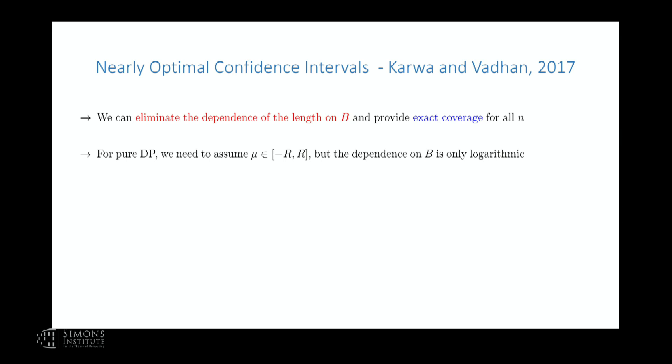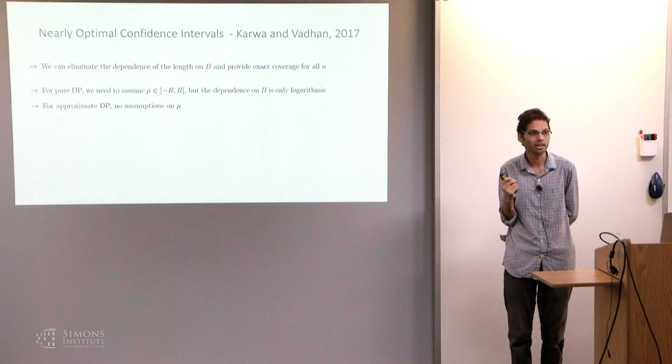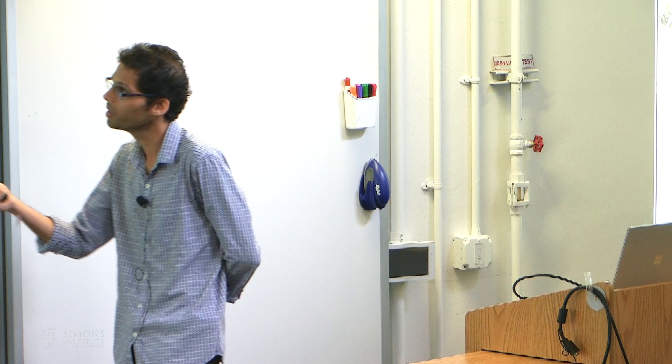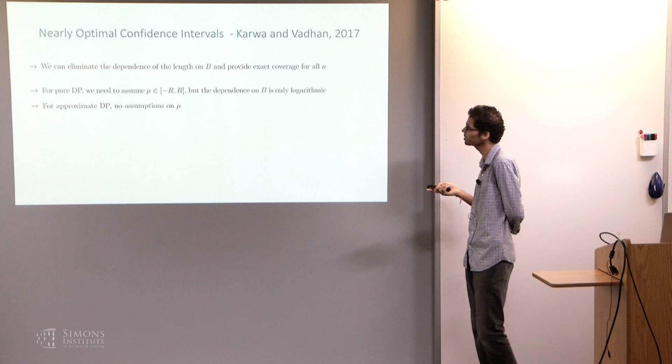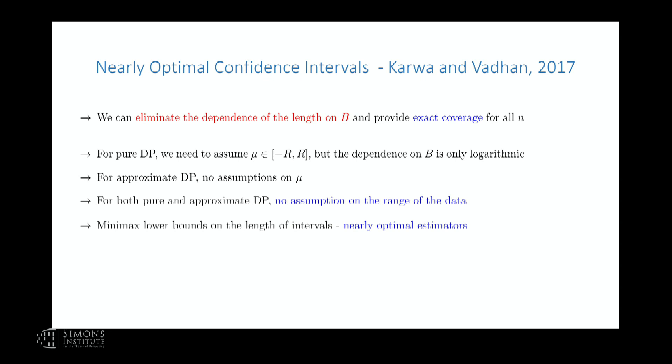For approximate differential privacy, there is no input needed from the end user for constructing these confidence intervals. We also show that these are minimax confidence intervals — we have lower bounds on the length of the intervals and our estimators match those lower bounds up to logarithmic factors. All of these results hold for the unknown variance case as well. The estimator is actually very simple, with only two steps. In the first step, we estimate a differentially private range of the data. In the second step, we use this differentially private range to truncate data points and compute the confidence interval.